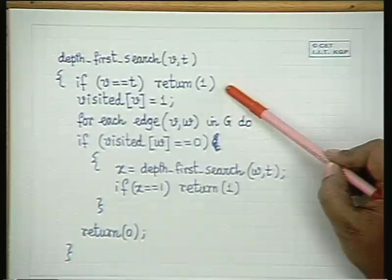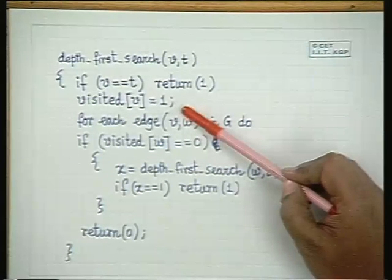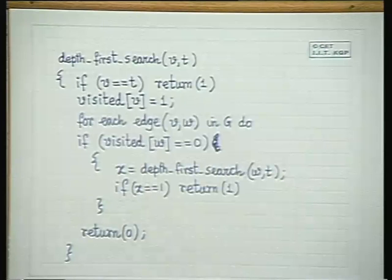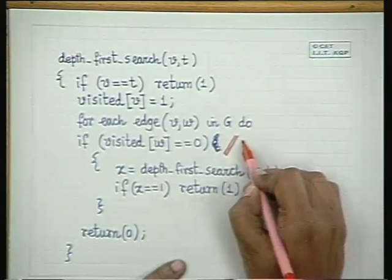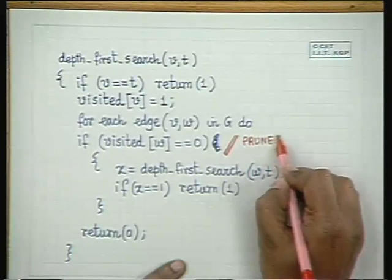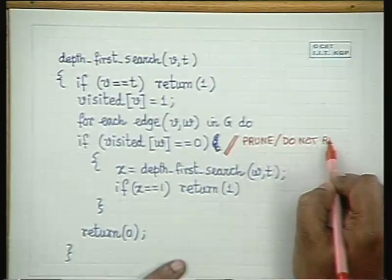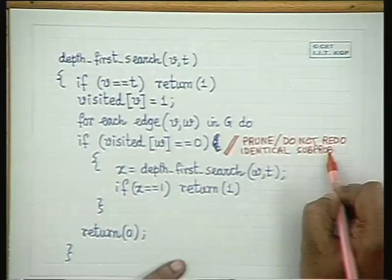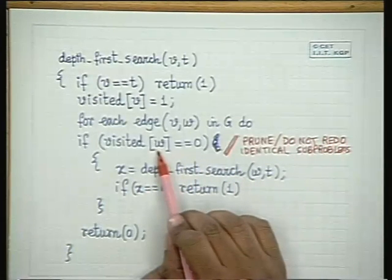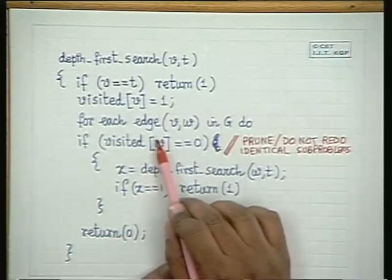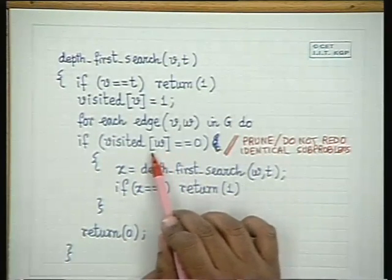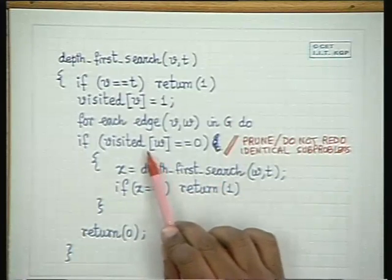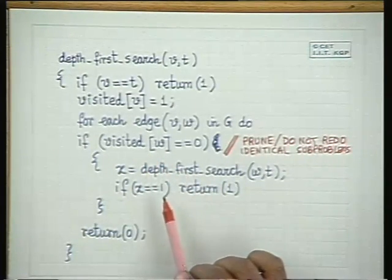The algorithm: if v equals t, return 1, then mark it visited because this is the vertex we have visited. Otherwise, for each edge vw in G, here we used the dynamic programming idea — prune or do not redo identical sub-problems. If w is visited already and there was a path from w to t, the algorithm would have stopped when we solved w earlier. Therefore if it is not visited, only then do you recursively visit it. That was the algorithm we obtained.